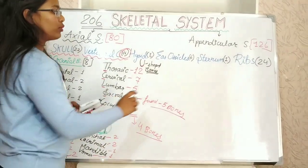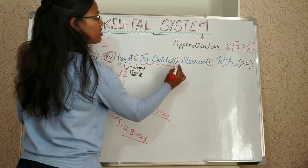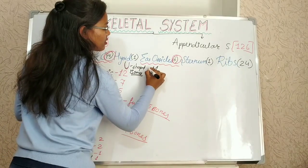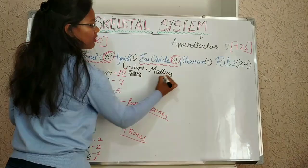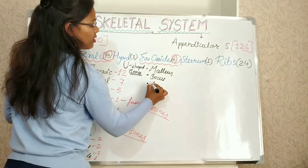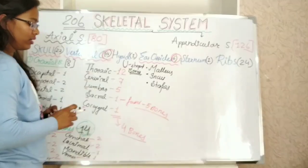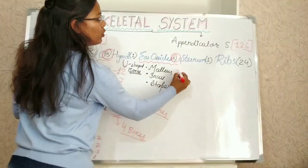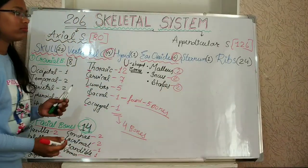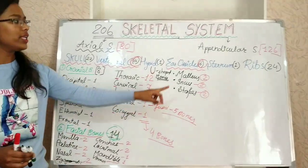Then let's come to the ear ossicles. If we talk about ear ossicles, it is 6 in number: malleus, incus, and stapes. Three bones in each ear, so two-two bones, total six bones.